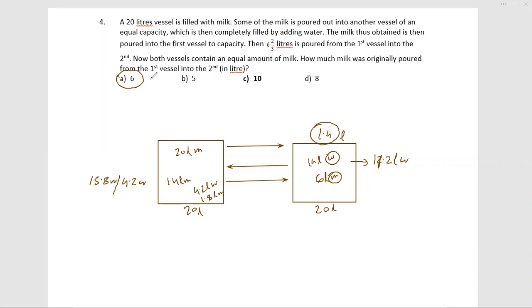So 6 is not the correct answer, and even in 5 also we will not get the correct answer because it is going low. So left with 10 and 8, I will start checking with 10 because checking with 10 is easy.